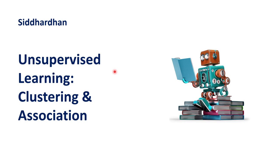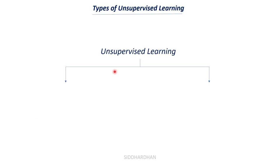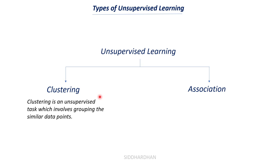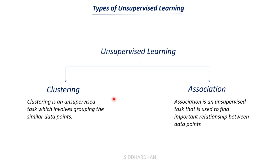Now let's move on to the types of unsupervised learning: clustering and association. Clustering is an unsupervised task that involves grouping similar data points together, as seen in the apple and mango example. Association is slightly different — it is also unsupervised, meaning we don't give any labels to the model. We give the data and the model tries to find the important relationships between data points — how one particular data point is associated with other data points.